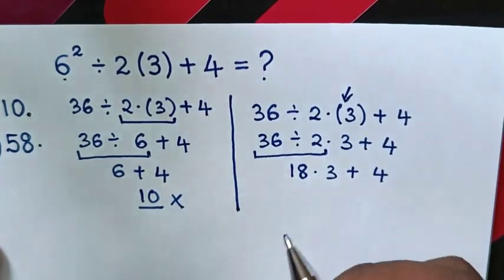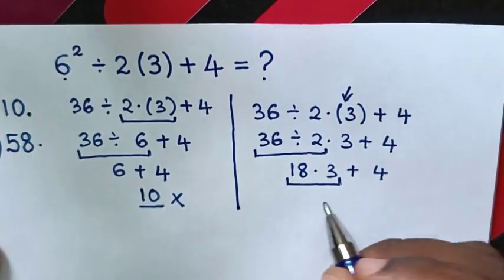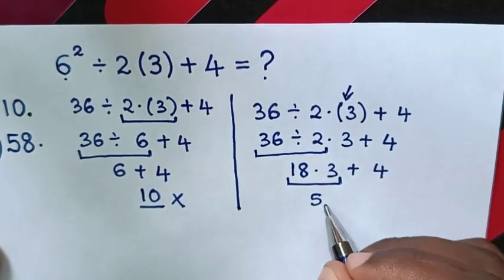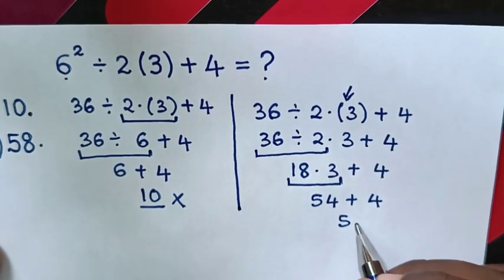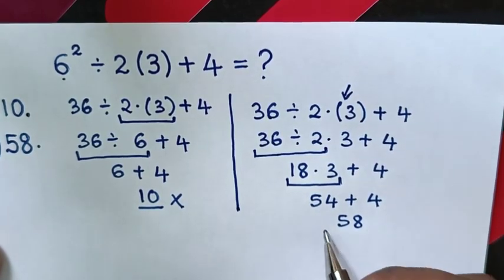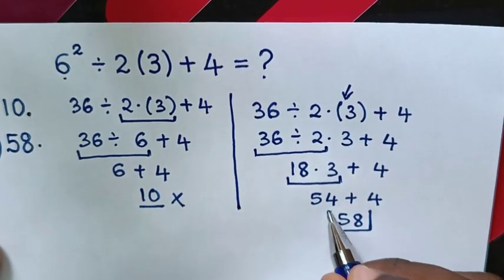So, 18 times 3 is 54, then plus 4. So, this plus this is 58, which is the correct answer from this problem.